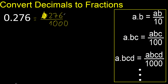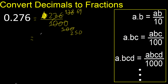therefore three zeros. Can be simplified because can be divided by the same number — divided by two, divided by two, divided by two. Can be divided by two, divided by two. Finish because cannot be divided by the same number.